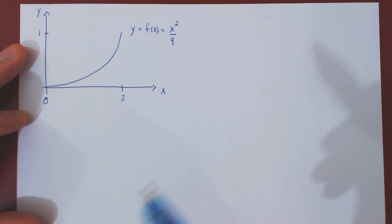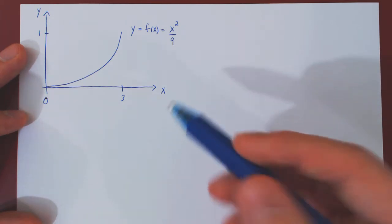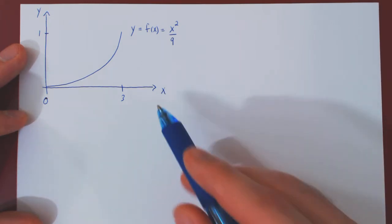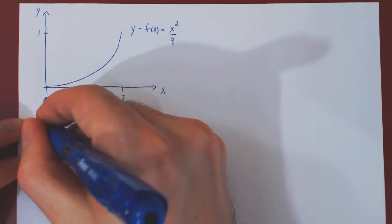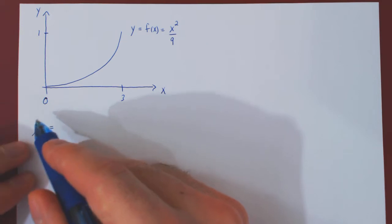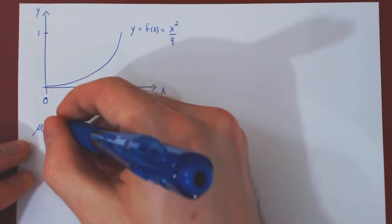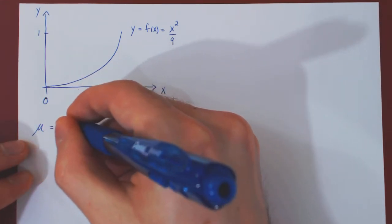In this video, we want to find the mean, therefore the average value of the random variable x. The mean is denoted by mu, the Greek letter M, which we also call the expected value of x.